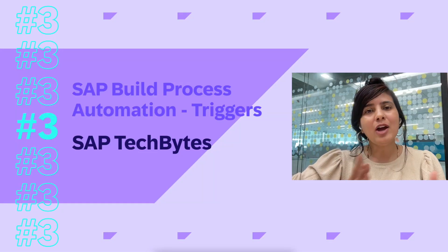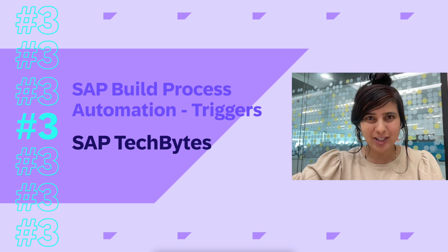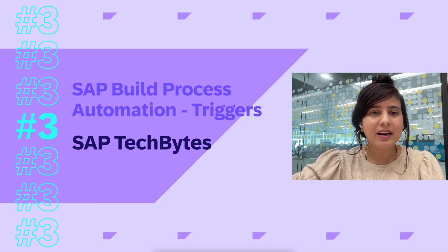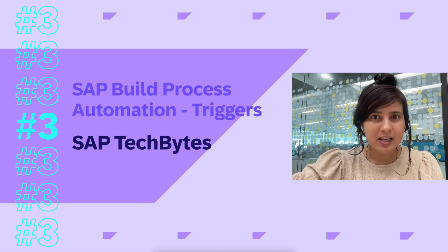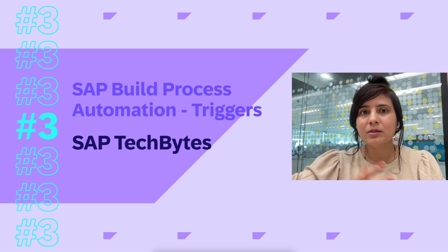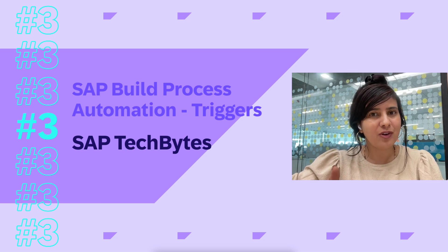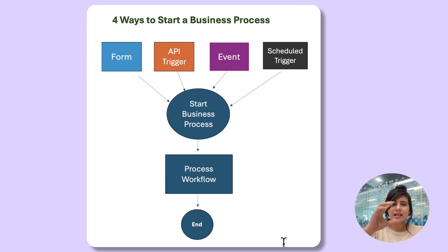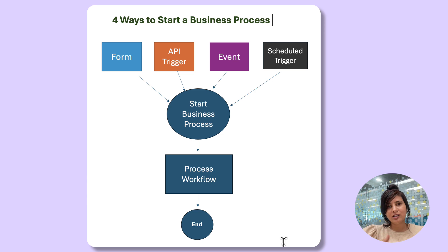Hello everybody. Welcome back to Part 3 of the SAP Build Process Automation Tech Byte series. In this episode, we shall understand the various ways through which a business process or workflow can be started or triggered. The business process has a start, then comes the set of steps or activities that have to be executed, and then it ends with the desired outcome. This is the process flow.